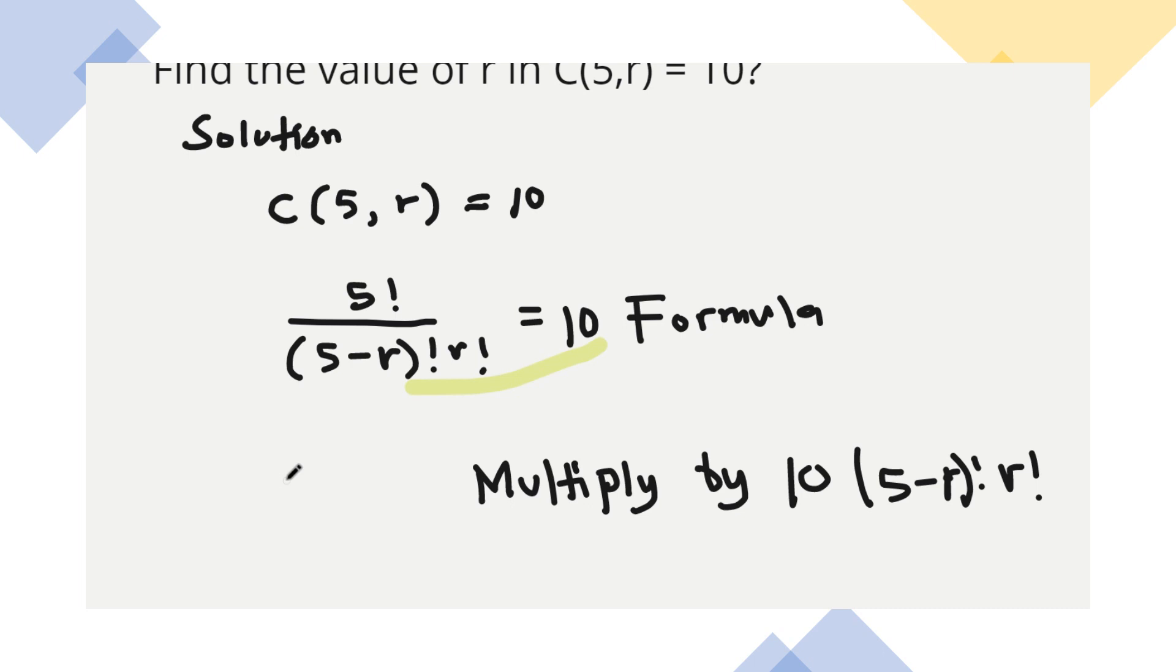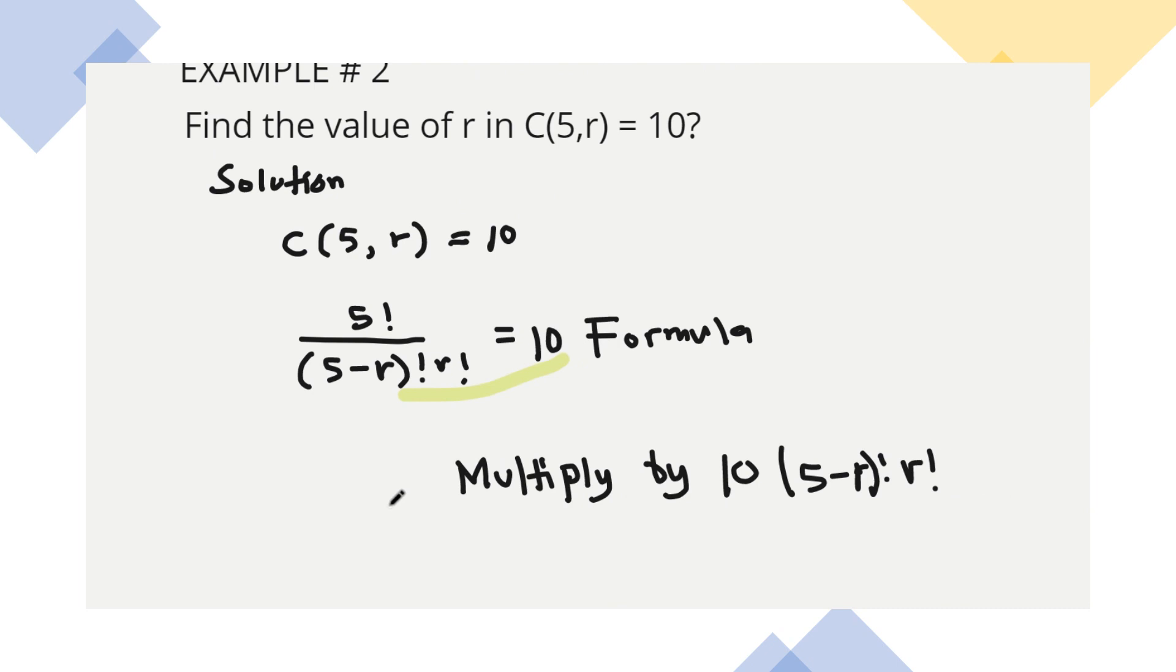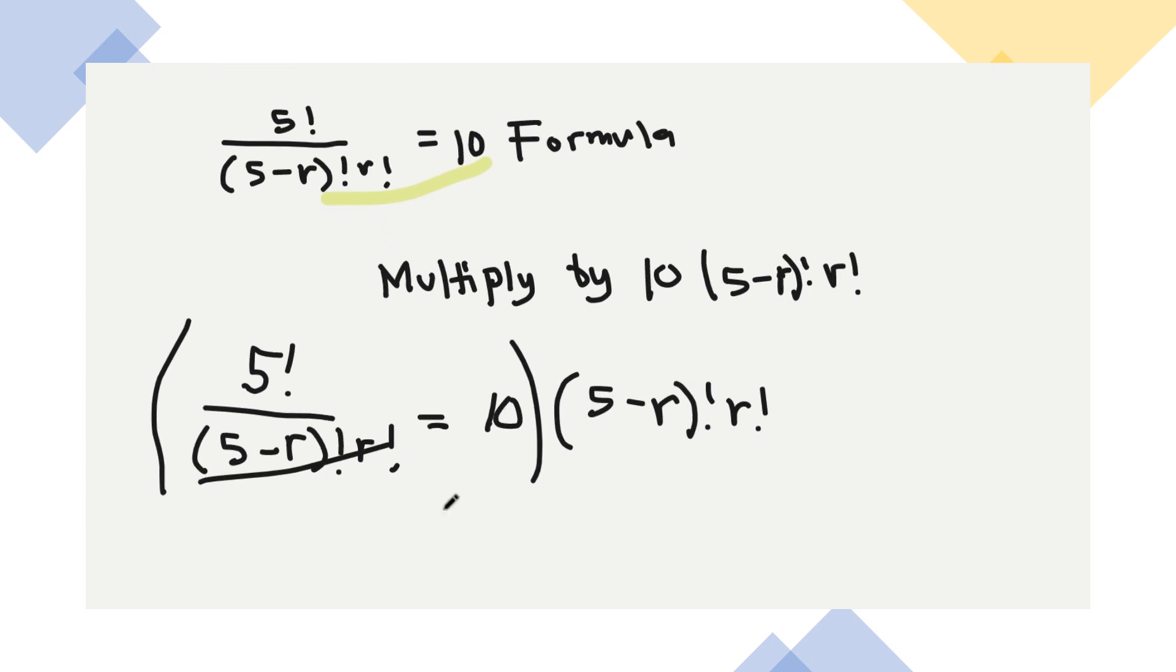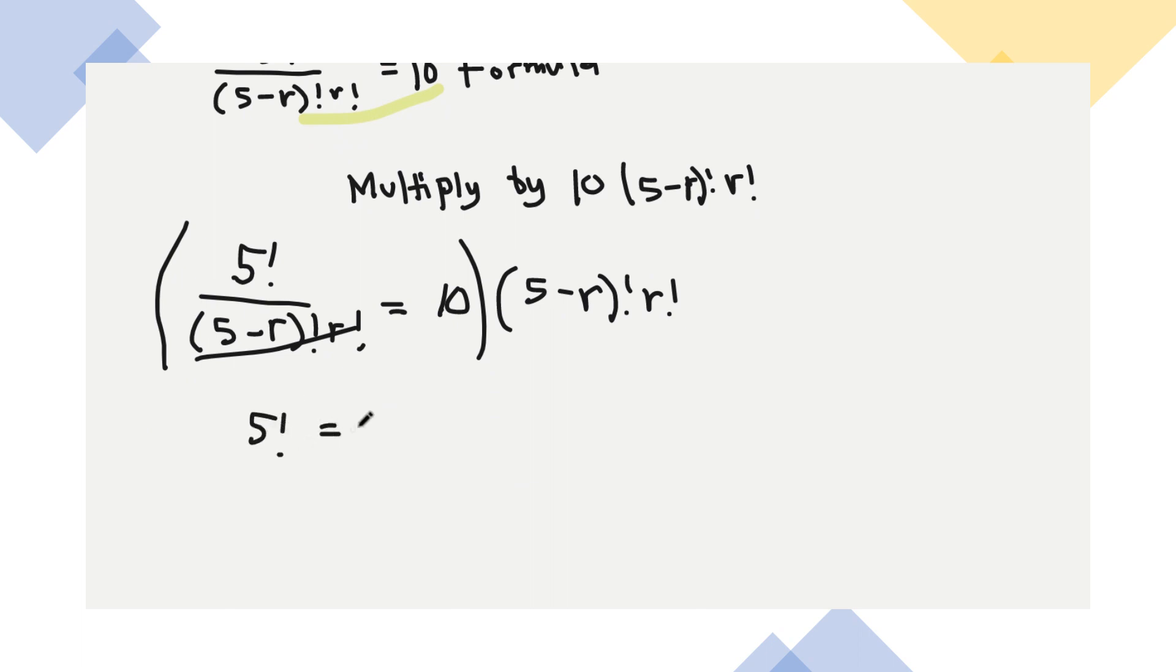Alright, next, ang gagawin mo dyan, next step na gagawin mo, so you need to multiply now. So that will be 5 factorial. Sige, isa-isahin mo na natin. Sabi niya, i-multiply, so isulat mo na natin again yan, para mas malinaw, kasi sagutan ko na sana. Yan, so is equals to 10, so magiging, i-multiply mo daw ito sa (5-R) factorial R factorial. Yan, yung both sides na yan, i-multiply mo para macancel ito. Tapos matransfer na yan dyan. So ang result niya, magiging 5 factorial is equals to 10(5-R) factorial R factorial. Yan, ganun na siya.